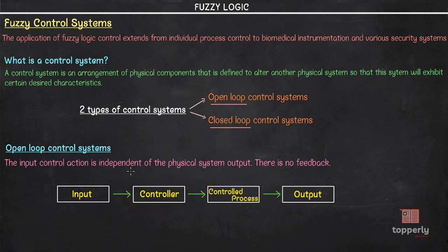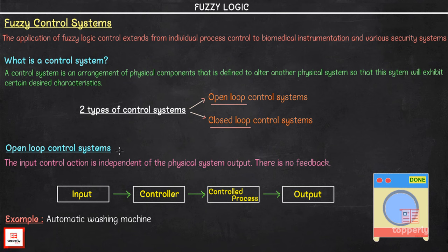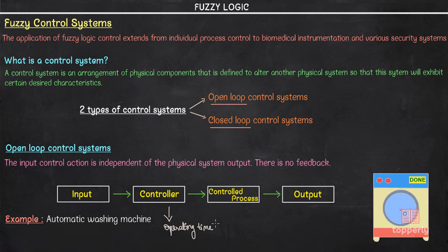An example of an open loop control system is an automatic washing machine. The user manually sets the operating time of the machine. The machine stops operating once the set time is reached and does not check if the desired cleanliness of the clothes is obtained — because the machine does not have any feedback. The operating time or timer is the controller, and the control process is the act of washing the clothes.